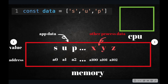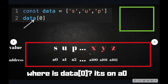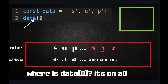The memory is shared with everyone. This is the stuff that I'm not supposed to access — XYZ is a password, for example, stored by some other process in the same memory. I don't have access to it; it has a specific address. If I want to access data[0], which is the value S, the processor will ask: where is data[0] really? Well, it's at address A0 — that's how we find the memory location.